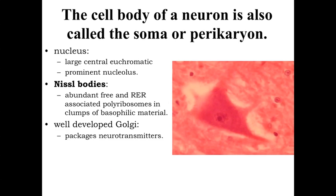The cell body of a neuron is given a variety of names: the soma, meaning body, or the perikaryon — peri meaning around, karyon meaning nucleus — essentially the region around the nucleus. The nucleus of most neurons is relatively large, normally centrally placed, and fairly euchromatic with a prominent nucleolus, a characteristic we've seen in other cells involved with protein synthesis, as these neurons also carry out a lot of protein synthesis.